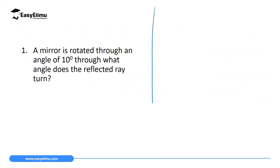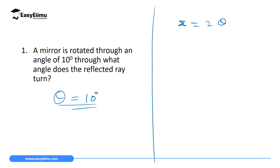Let's do a few questions. Question one: a mirror is rotated through an angle of 10 degrees — through what angle does the reflected ray rotate? In this case theta equals 10 degrees, and x equals 2 times theta equals 2 times 10 degrees, which gives 20 degrees. So if you rotate a mirror by 10 degrees, the reflected ray rotates by 20 degrees.